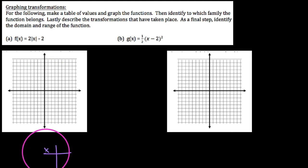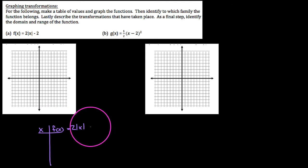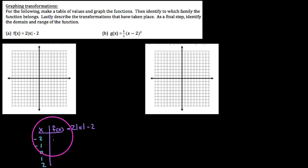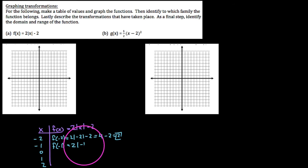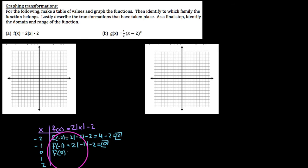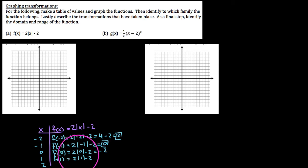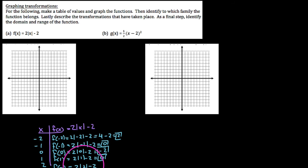We have f of x defined as 2 times the absolute value of x, minus 2. Using input values negative two, negative one, zero, one, and two: f of negative two gives 2 times the absolute value of negative two minus 2, which is 2 times 2 minus 2, giving us 2. F of negative one gives 2 times 1 minus 2, which is 0. F of zero gives 0 minus 2, which is negative 2. F of one gives 0 again, and f of two gives 2 times 2 minus 2, which is 4 minus 2 equals 2.